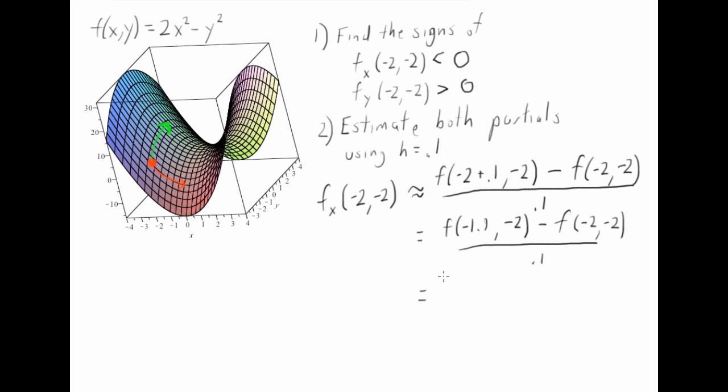If you plug this stuff into the function, what you'll get is 3.22 for the first expression and then minus 4 for the second expression over 0.1. And this comes out to negative 7.8. So we think of our function decreasing at a rate of -7.8 as we move in the positive x direction.